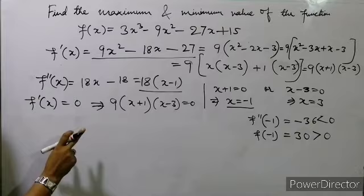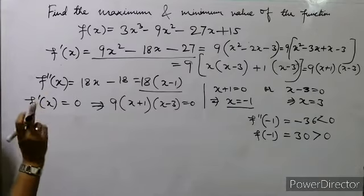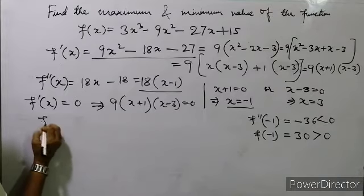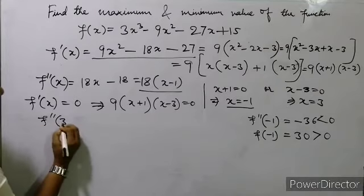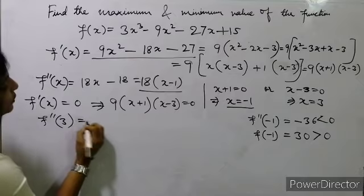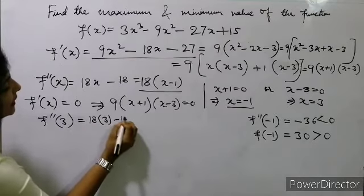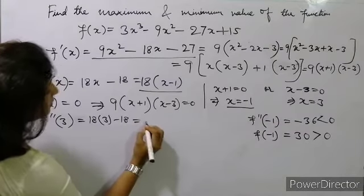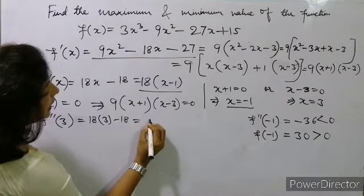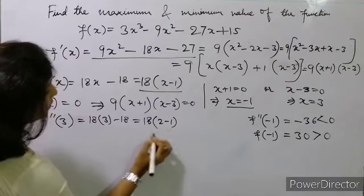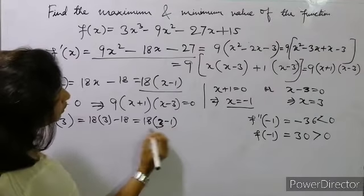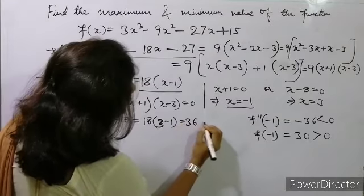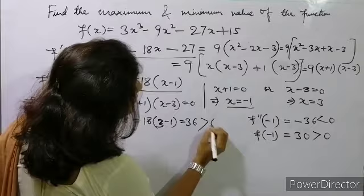Now we find f''(3). f''(3) = 18×3 - 18 = 54 - 18 = 36. So f''(3) = 36, which is greater than 0, meaning x = 3 gives a minimum.